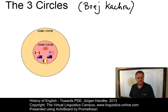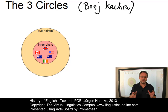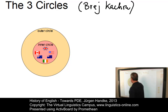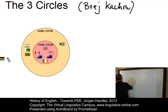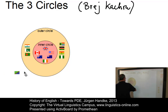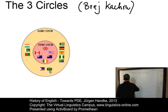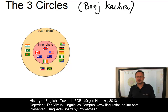The outer circle includes countries colonized by Britain and the United States where English is spoken as a second language and where it plays an important historical and governmental role in multilingual settings. In Asia we have countries such as India, Pakistan or Bangladesh. In Africa we have South Africa, Kenya, Ghana, Nigeria and Tanzania. And then the Philippines, Jamaica, Malaysia, Sri Lanka, Singapore, Zambia, to name just a few.